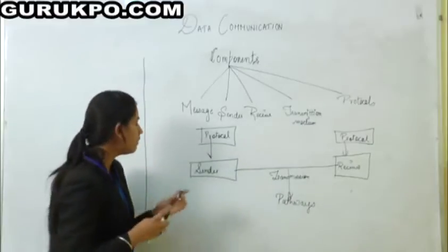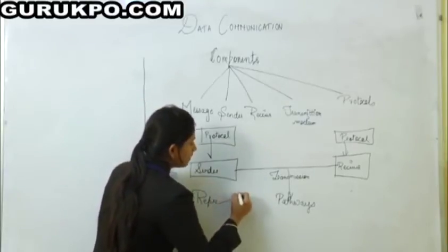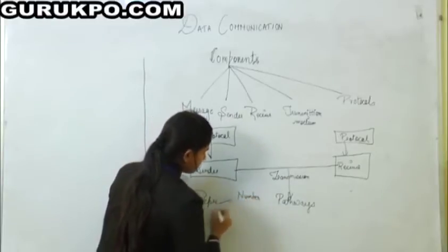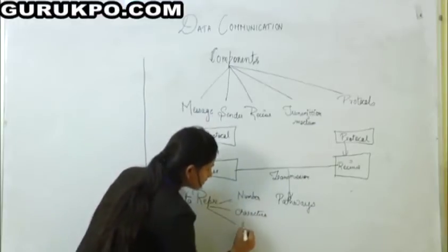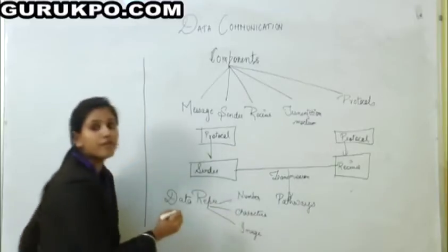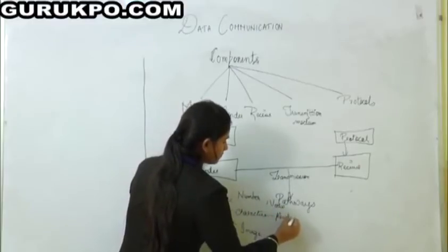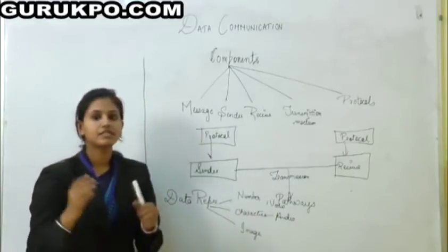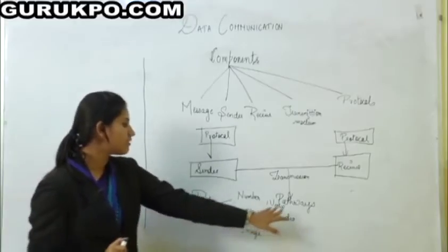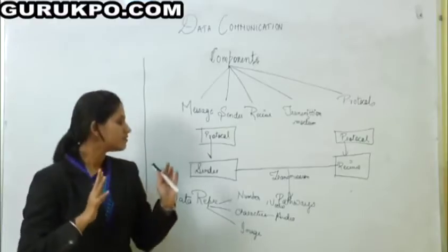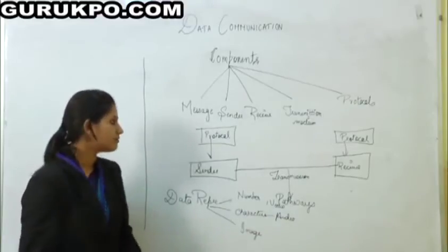Data representation: data can be represented through various ways. First is numbers, second is characters, third is images, and fourth is video and audio. Images are basically transmitted through a matrix form. Audio and video use still images, music, or sound.